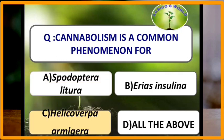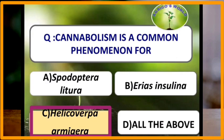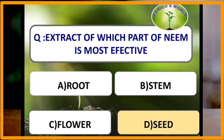Cannibalism is a common phenomenon for Helicoverpa armigera. Cannibalism is the act of consuming another individual of the same species as food. The extract of the seed of neem is most effective.